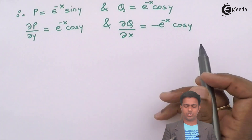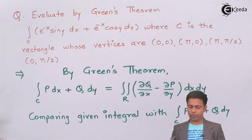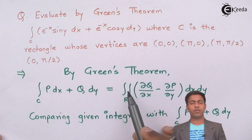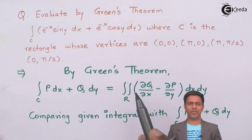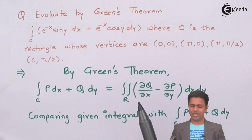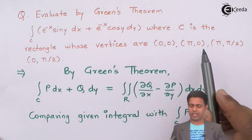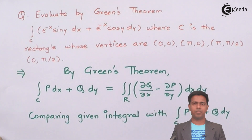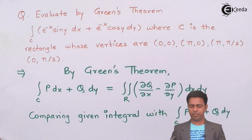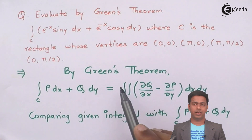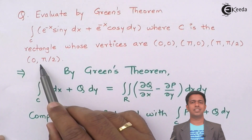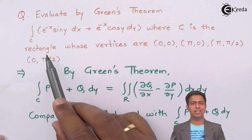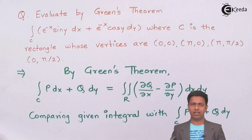We now have both partial derivative values. Next, we need to find the limits of the integral, but to do that we need to draw the given region. I'll draw that curve, look at its boundaries, and based on that we'll decide the limits. The curve is given as the rectangle whose vertices are given.